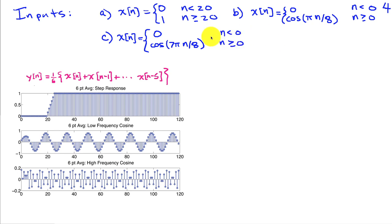For each of these four systems, we're going to apply a set of three different inputs. We're going to apply an input that changes from 0 to 1 at time 20, a relatively low frequency cosine at frequency π/8, and another input with a relatively high frequency cosine at 7π/8.